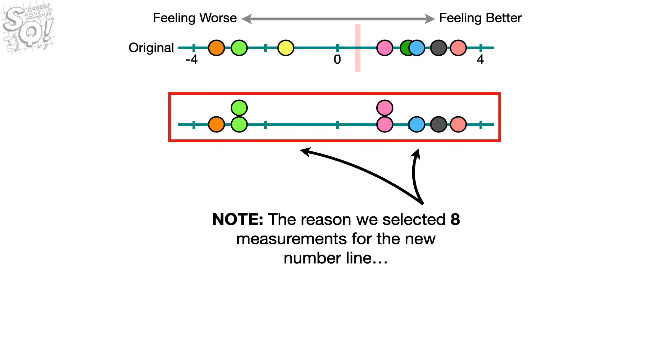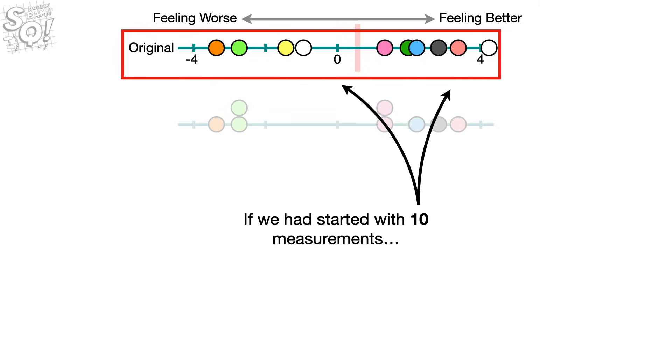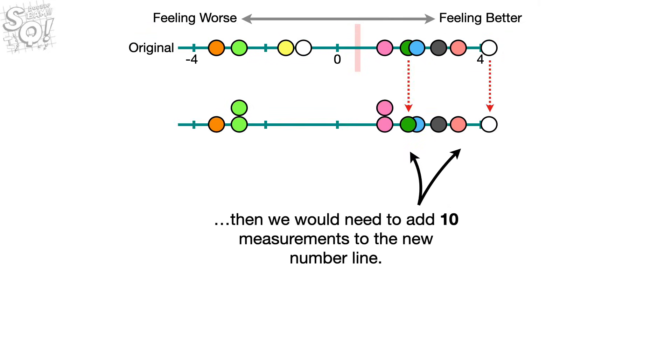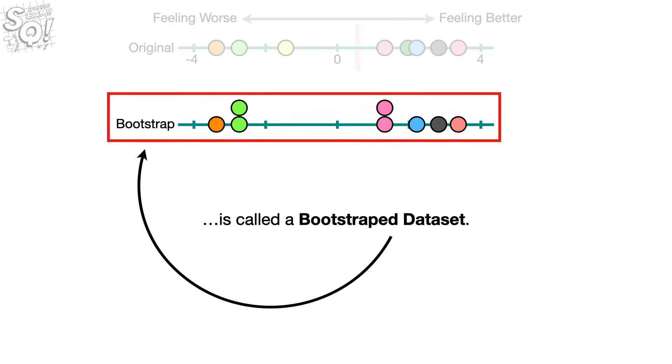Note, the reason we selected eight measurements for the new number line is because the original data set that we are sampling from contains eight measurements. If we had started with ten measurements, then we would need to add ten measurements to the new number line. Anyway, this new data set that was created using sampling with replacement so that it had the same number of values as the original data set is called a bootstrapped data set.